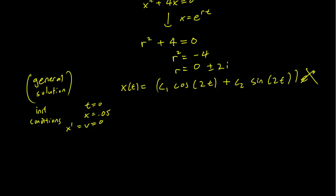So when t = 0, x(0) is going to be c1 cos(2t) is going to be 1 plus c2 sin(2t) is going to be 0. And this just gets us 0.05 = c1.